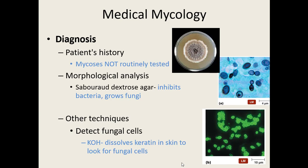For lab diagnosis, they use a selective agar that inhibits bacterial growth but allows fungi to grow, so patient samples can be tested for the presence of fungi. Under the microscope, they can look for various spores, hyphae, and specific fungal structures. For skin infections, they can dissolve the keratin in the skin and look for remaining fungal spores.